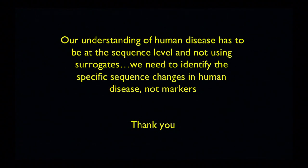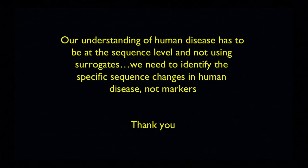I'm going to leave you with the message that because ancestry and disease burdens are confounded, we have to understand disease not only at the level of genes, but we really have to do so at the sequence level. We have to do so not using surrogates of race or ethnicity as we have. We really need to identify the specific sequence changes in human disease, not simply as markers, but in aspects where we understand the pathophysiology of the disease. Thank you.